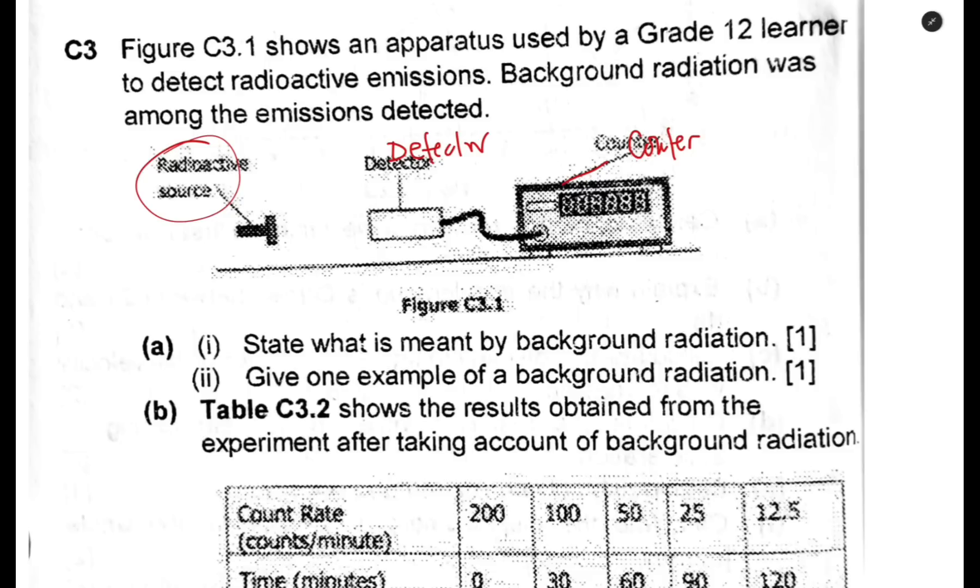One example of background radiation: you can put cosmic radiation or radon gas. There are quite a number of them you need to know.